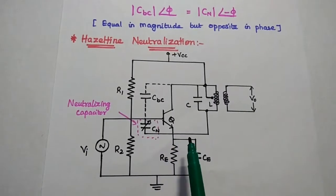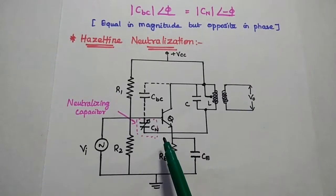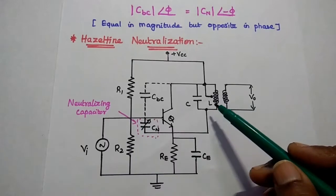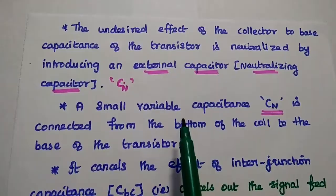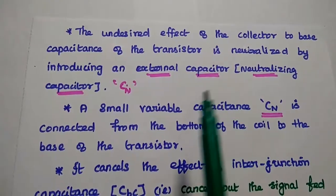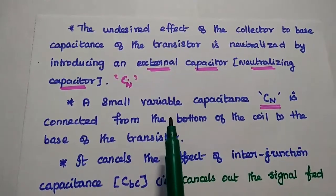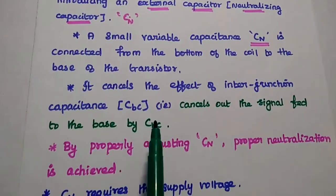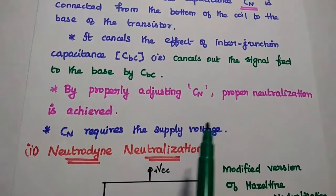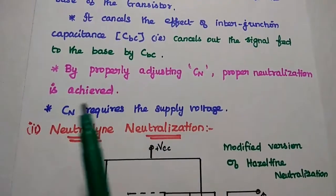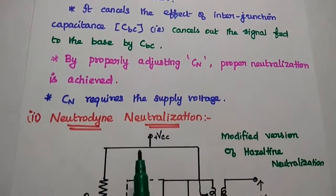There is one drawback in Hazeldyne neutralization: the neutralizing capacitor is taken from the primary winding, so it depends on the supply voltage. By properly adjusting this, we can get exact neutralization, but the major drawback is that the neutralizing capacitor requires and depends on the supply voltage.